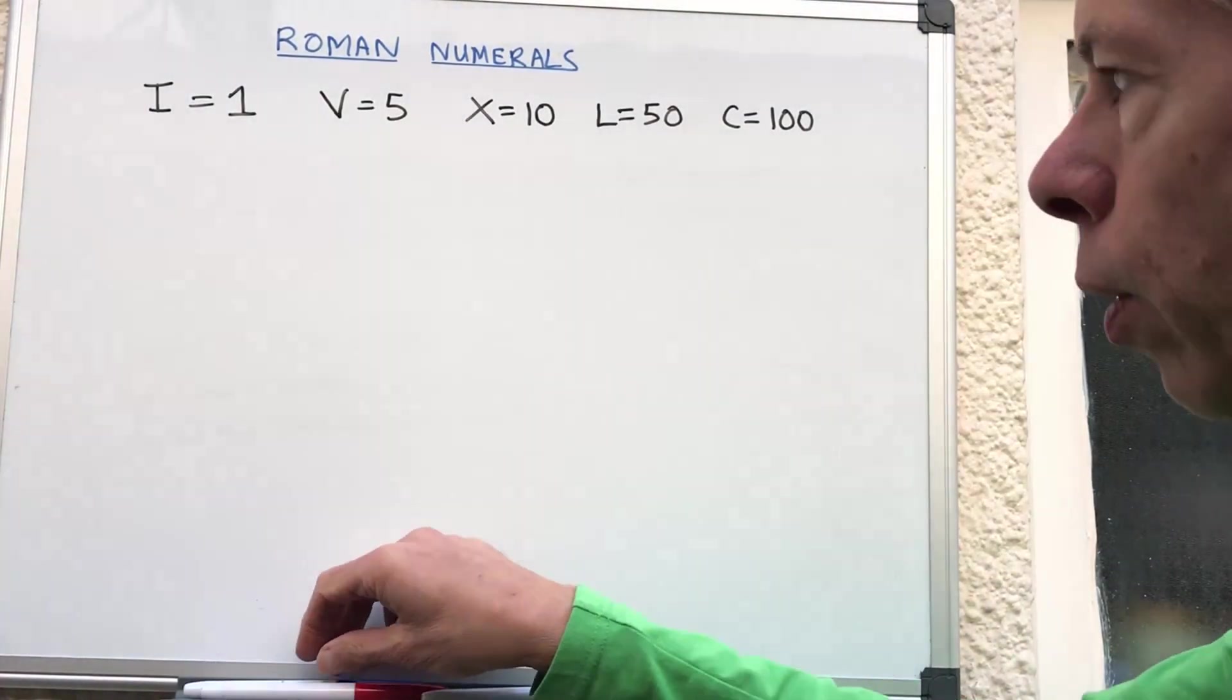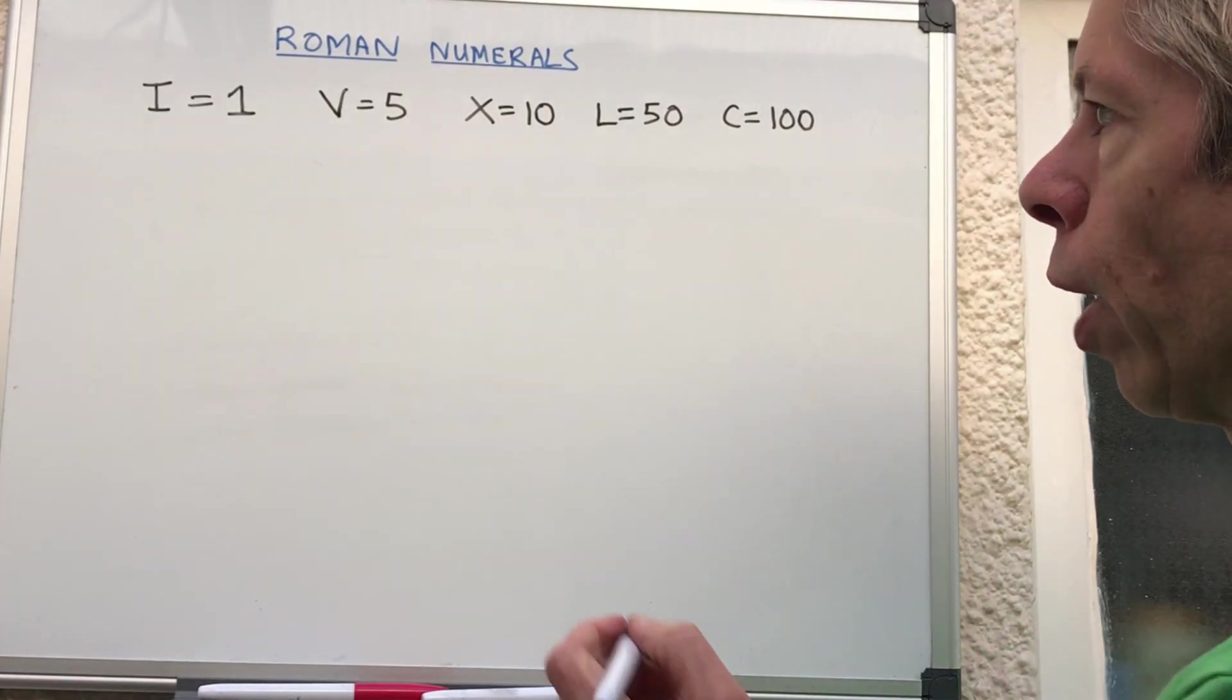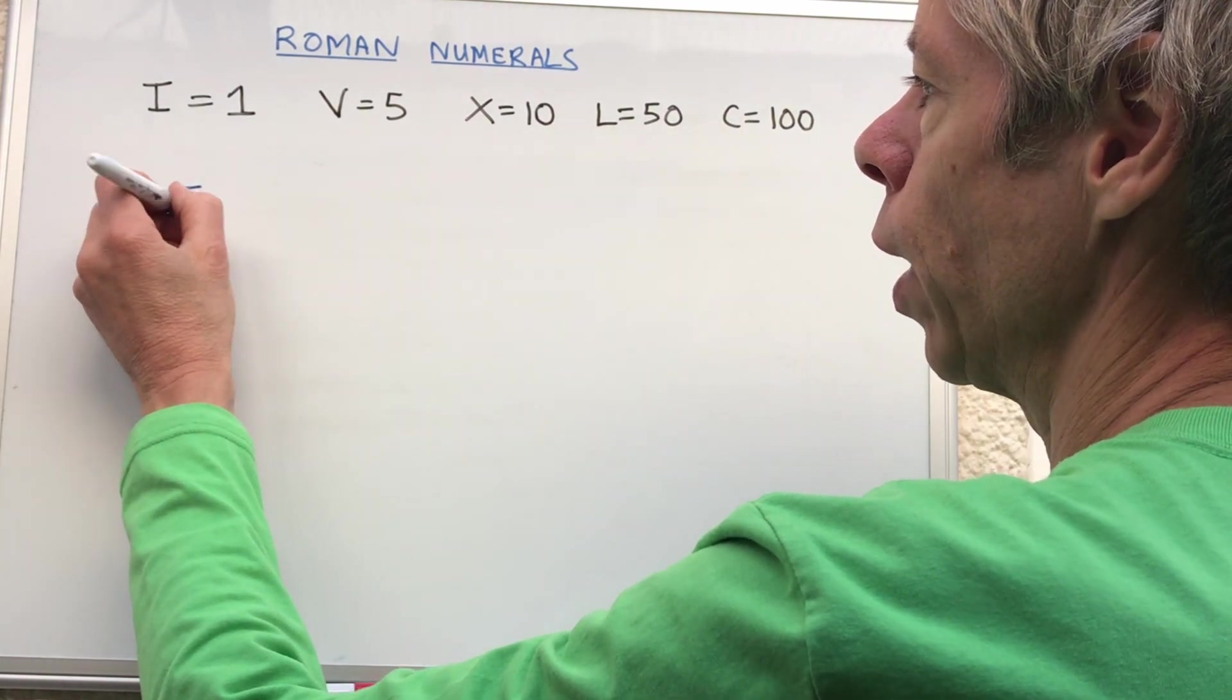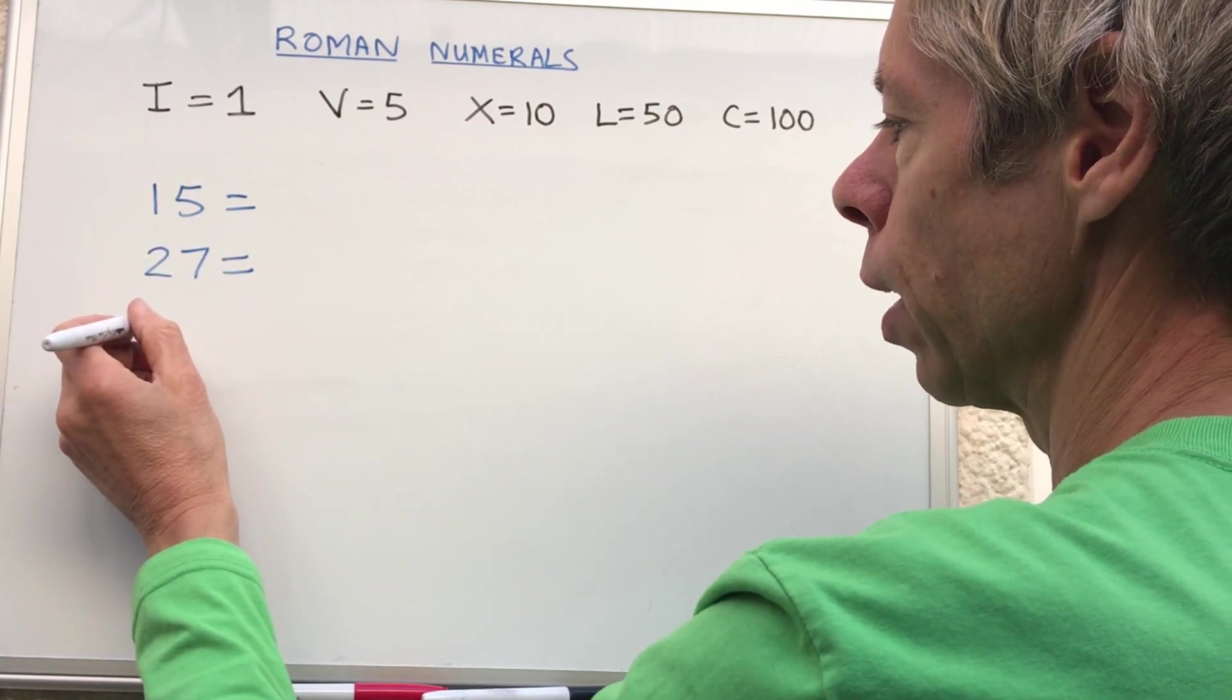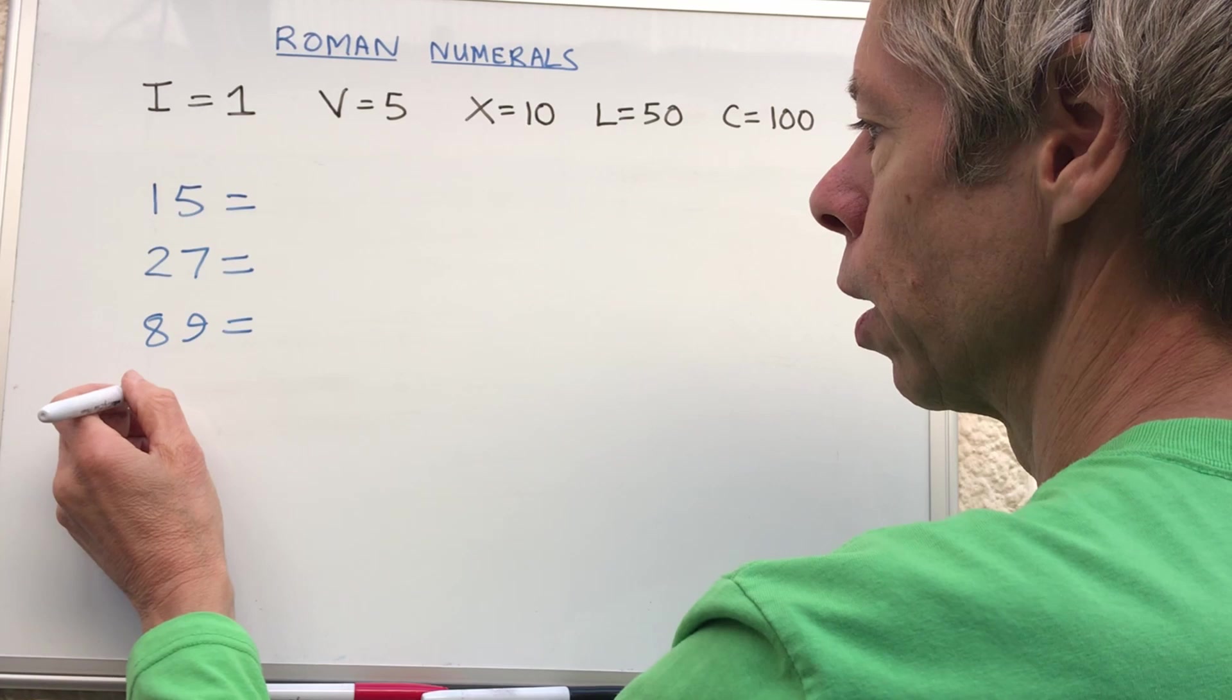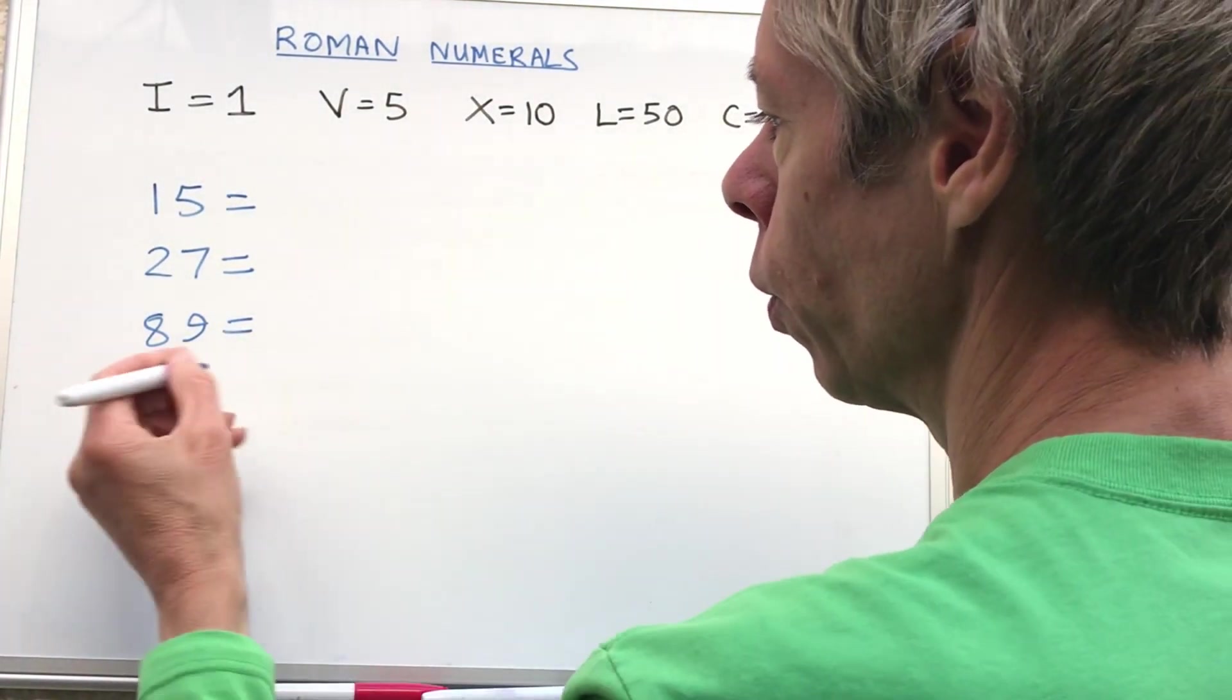We want to write 15, we're going to write 27, we're going to write 89, and we're going to write 100. That's giving you a clue, isn't it? You're going to write 103.